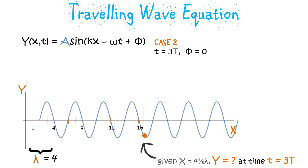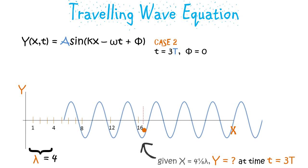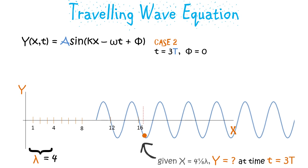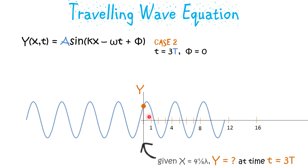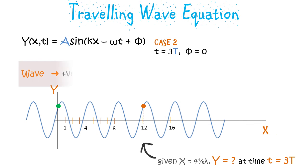We will replay this concept with t equal to 3 time periods so that we understand the minus omega t term well. It is not a surprise that after 3 time periods the position of y is the same as where we started. We get the same result when we set the reference at kx equal to 4 and 1/8 lambda and move the reference axis by 3 time periods. As the wave moves forward, the reference axis relative to the wave is considered to be moving back — that's why we use minus omega t.